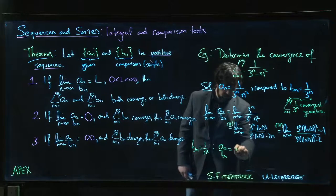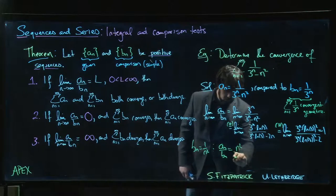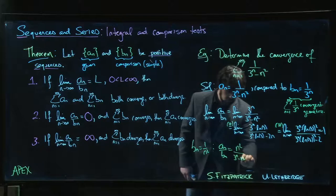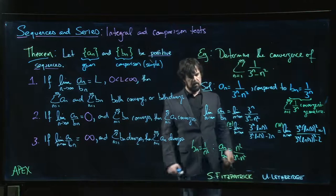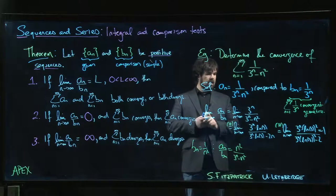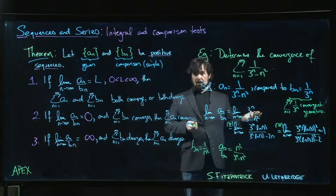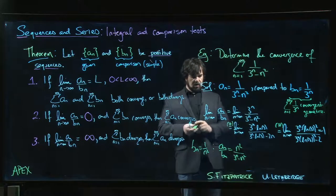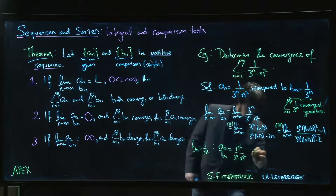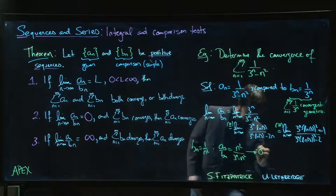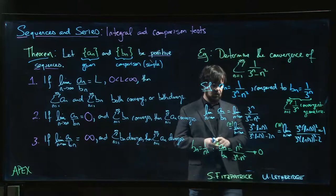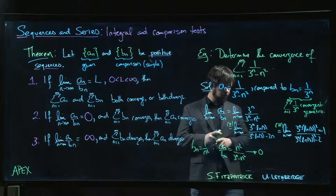What would I get then? Well, if I did that, then a_n over b_n - I would get instead n squared over 3 to the n minus n squared. And we try to take the limit, and again you can use L'Hopital's rule a couple of times, and you find that this is going to go to 0 as n goes to infinity.